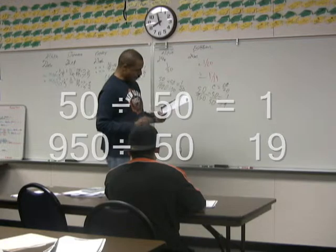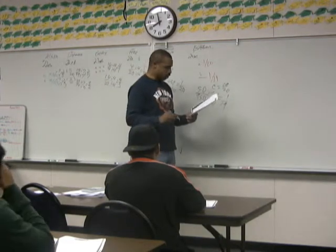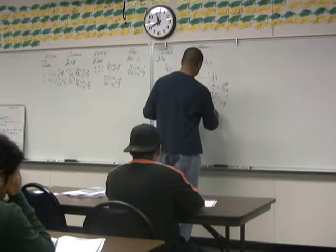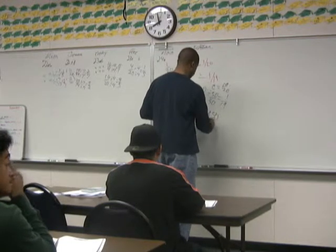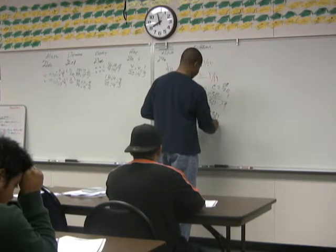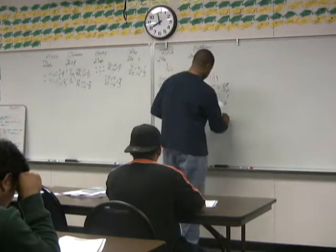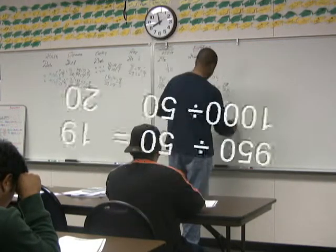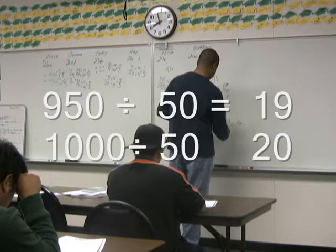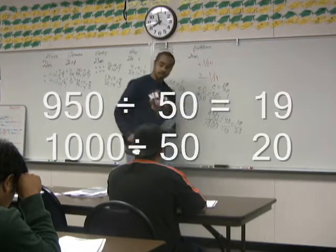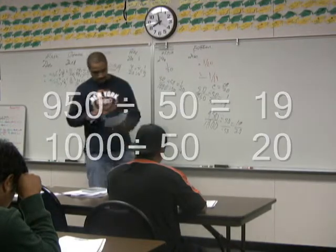24C: what is the ratio of good switches — 950 — to total switches — 1,000? Take a 50 out and you get 19; take a 50 out of 1,000 and you get 20. So the answer is 19 to 20. Good job, Esteban.